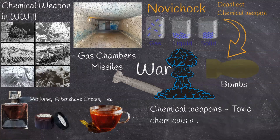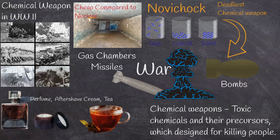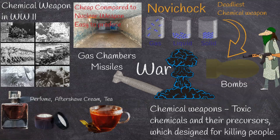Chemical weapons are defined as toxic chemicals and their precursors, which are designed for killing people. Chemical warfare is probably one of the most brutal created by mankind, in comparison with biological and nuclear warfare. Chemical weapons are inexpensive and relatively easy to produce, even by small terrorist groups, to create mass casualties with small quantities.